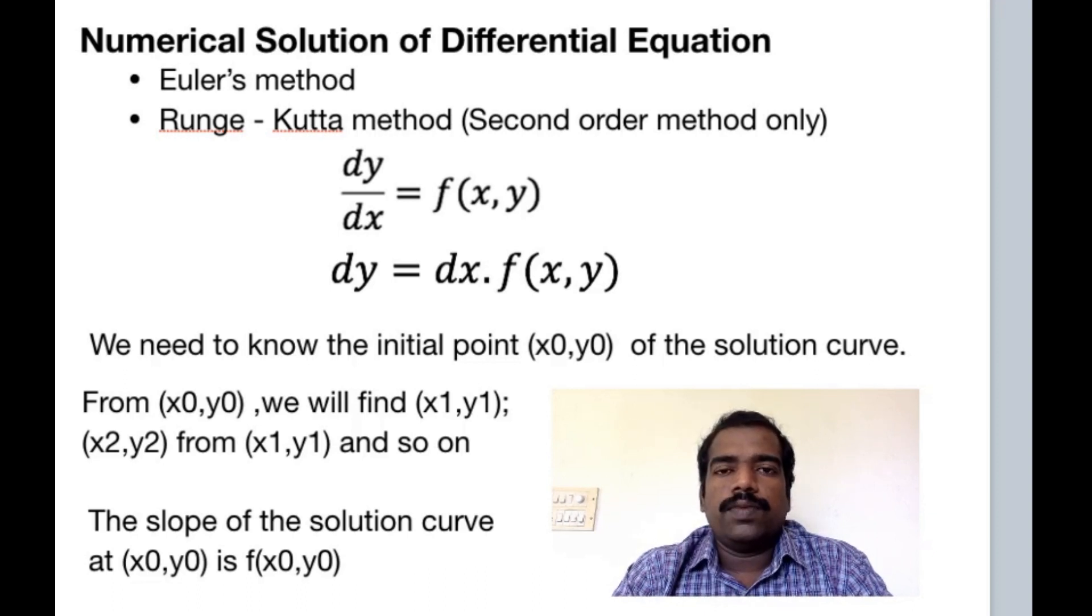As I discussed earlier, we need certain conditions which is nothing but we need to know the initial point (x0,y0) of the solution curve. From this initial point (x0,y0) we will find (x1,y1). From (x1,y1) we will find (x2,y2) and so on. These x values are equidistant.